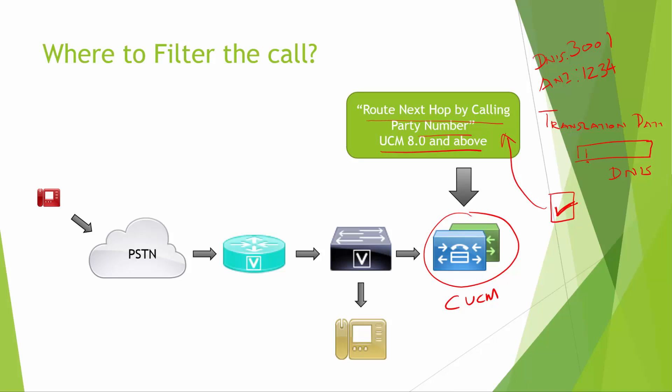Once the digit analysis engine processes this call, it sends it to the next hop. By playing with CSS and partitions, the call can be routed to another translation pattern — say, one defined for 1234. When we check the 'Route to Next Hop Based on Calling Party Number' checkbox, the initial translation pattern looks up the DNIS and routes to the next hop, where the digit analysis engine then looks at the calling party number.